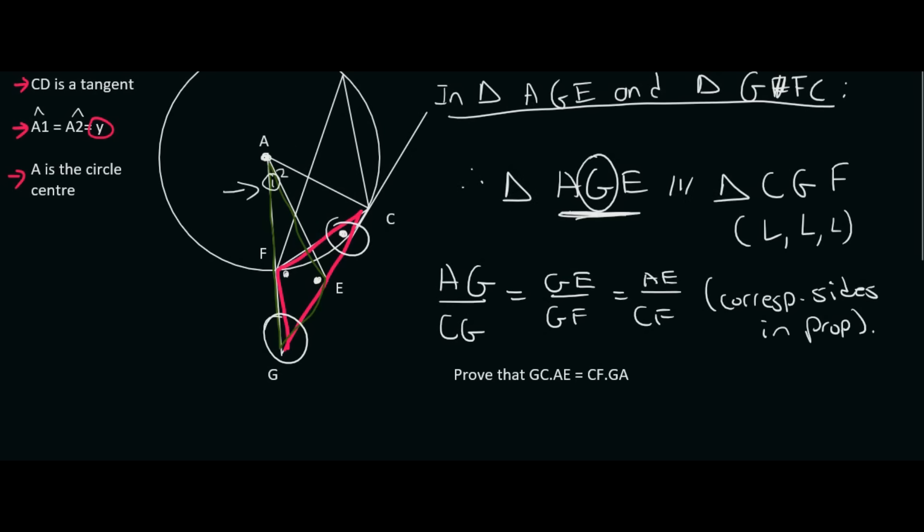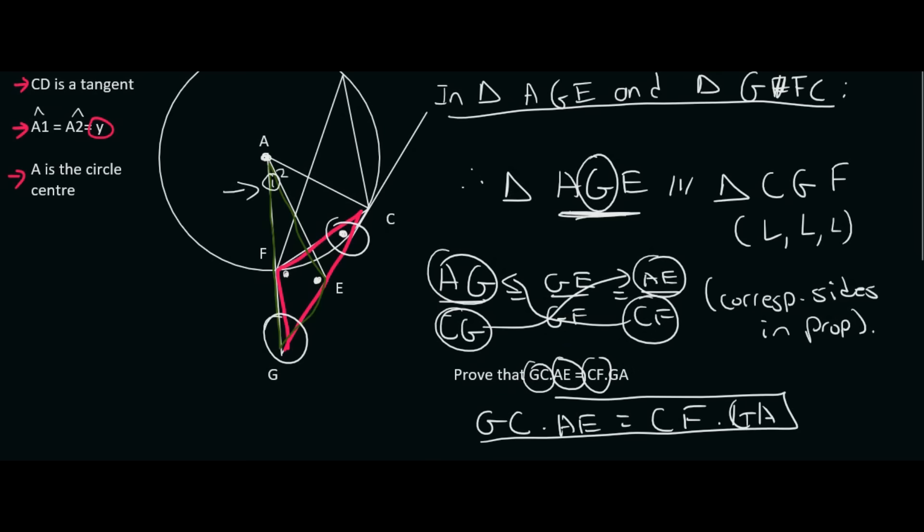And so the original question was to prove the following. So I'm just going to circle GC or CG. It doesn't matter. AE is over here. CF is over there. And GA is over there. So we choose those two. We do cross multiplication. And what we're going to end up with is GC times AE is equal to CF times GA. You see, so I just cross multiplied and I cross multiplied. And there you end up with your answer.